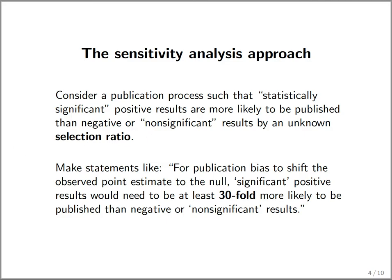The methods make statements of the following form: in order for publication bias to shift the observed point estimate to the null, significant positive results would need to be at least, say, 30-fold more likely to be published than negative or non-significant results. We can then think about whether a selection ratio of 30-fold is plausible or too high to be realistic in practice.